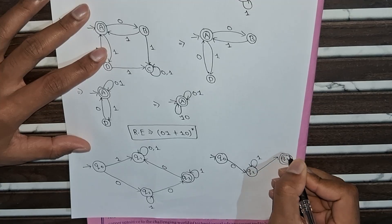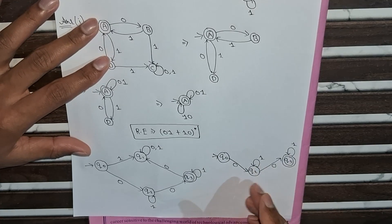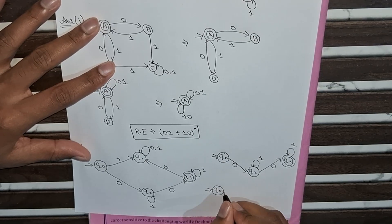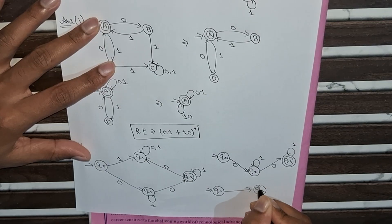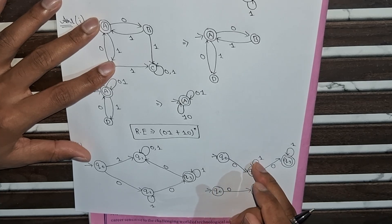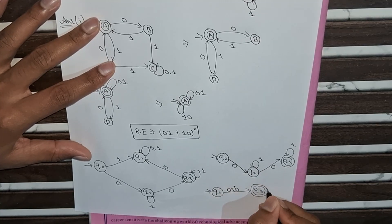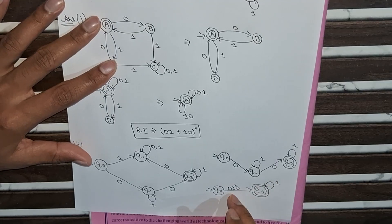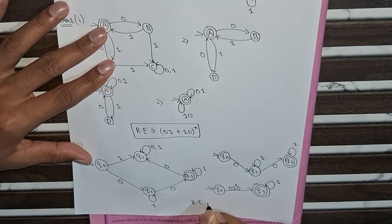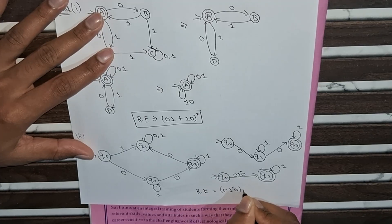q3 is the final state with a self loop 1. Now q2 is the intermediate state, so we also eliminate q2 from the finite automata. From q0 we write 0, but 1 is a self loop at q2, so it becomes 1*, then simply 0. There is also a self loop 1 at the final state. So the regular expression for this finite automata is 0 1* 0 | 1*.